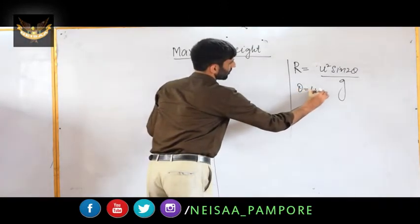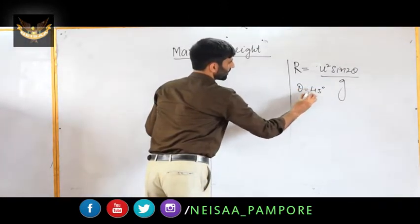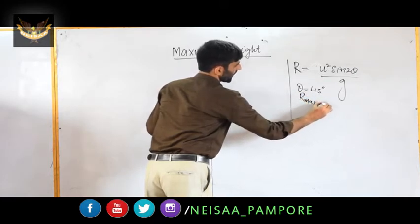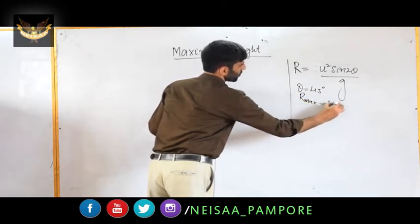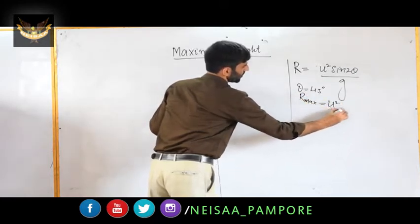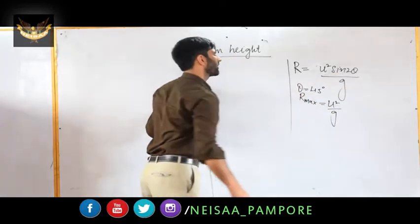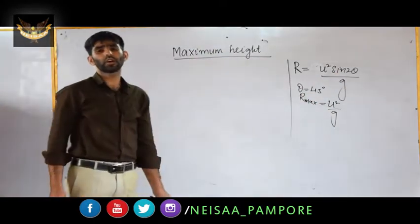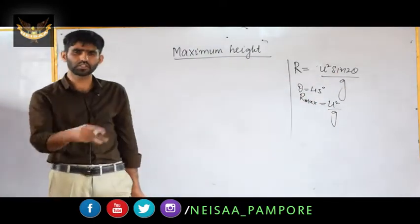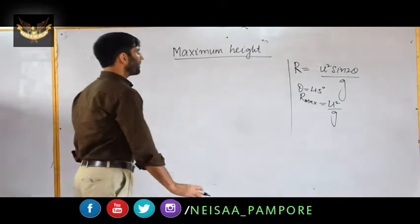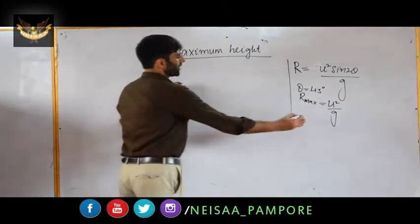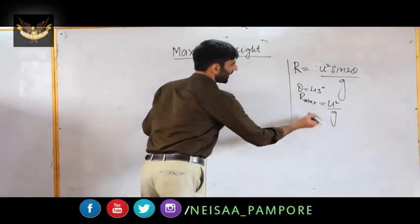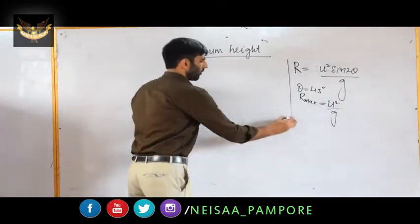At θ = 45°, the horizontal range is maximum and that is R_max = u²/g, because putting θ = 45° gives sin(90°) which is equal to 1. Now remember one more point: when we project a projectile at two different angles, such as θ and 90° minus θ.